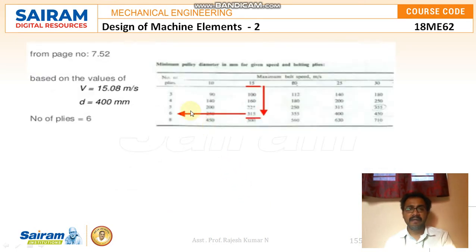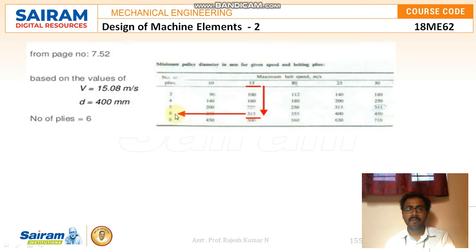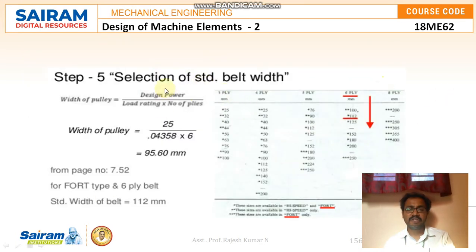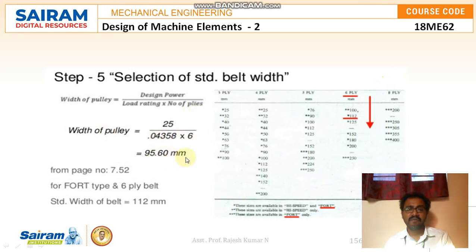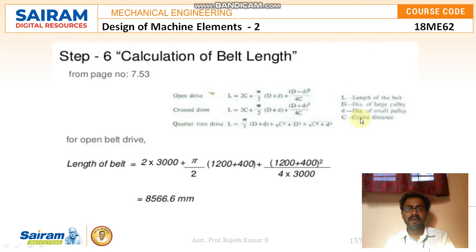Based on the velocity and diameter values, using the minimum pulley diameter table — with velocity around 15 m/s and diameter close to 400 mm — the number of plies is selected as 6. Step 5: Selection of standard belt width. Width = design power / (load rating × number of plies) = 25 / (0.04358 × 6) = 95.60 mm. From the table for a 6-ply belt, the standard belt width is 112 mm.